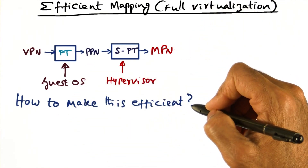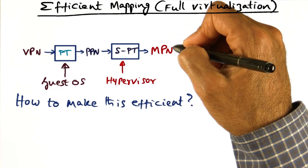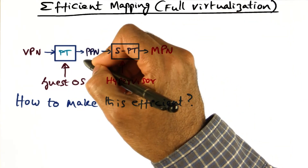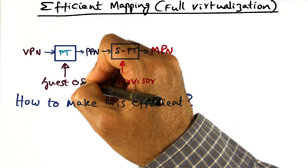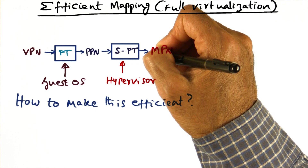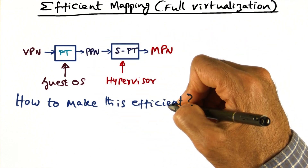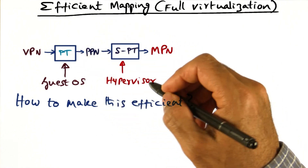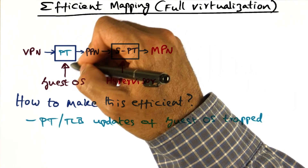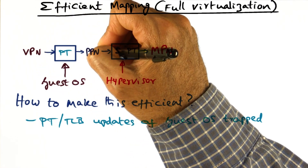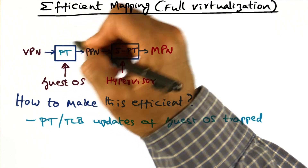So how to make this efficient? Because on every memory access of a process of the guest operating system, the virtual address has to be converted to a machine address. We want to avoid the one level of indirection that's happening because the virtual page number has to be converted to a physical page number by the guest operating system, and then it has to be looked up in the shadow page table by the hypervisor to generate the machine page number. We would like to make this process more efficient by getting rid of one level of indirection — that is, this translation by the guest operating system. The guest operating system is the one that establishes this mapping in the first place between a virtual page number and the physical page number, by creating an entry in the page table for the process that is generating this virtual address.